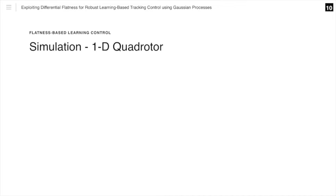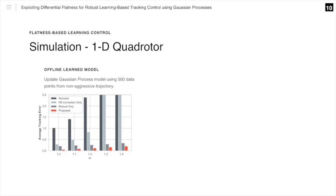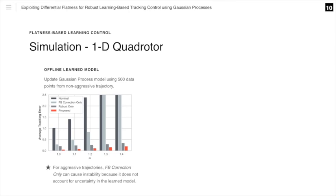We perform our first simulation on a 1D quadrotor where there is a mismatch between system and nominal model. In the first test, we use an offline learned model where the Gaussian process uses 500 data points from a non-aggressive trajectory. We investigate the average tracking error for increasingly more aggressive trajectories and compare this for the nominal case (no learning), strategy 1 (feedback correction only), strategy 2 (robust only), and our proposed strategy in red. It is very important to notice that for the most aggressive trajectories, i.e. omega greater than 1.2, feedback correction only can cause instability, because it does not account for uncertainty in the learned model.